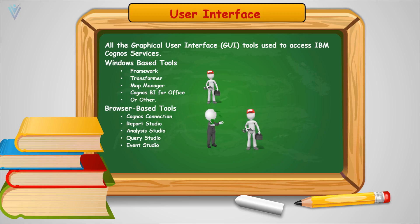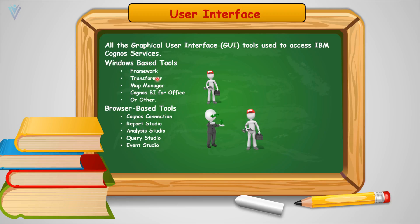Let's assume we only need to use a relational database. Then on the developer machine we need to install Framework Manager, configure Framework Manager, and allow access on Report Studio. Using Framework Manager and Report Studio, a developer can create the appropriate reports. If we need to use cubes, then for cube processing we need to install Transformer on the developer machine and also provide access on Analysis Studio.